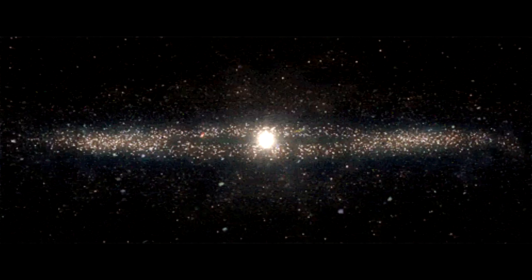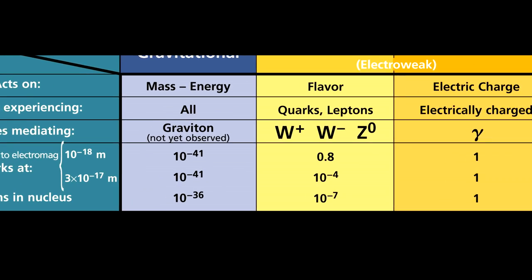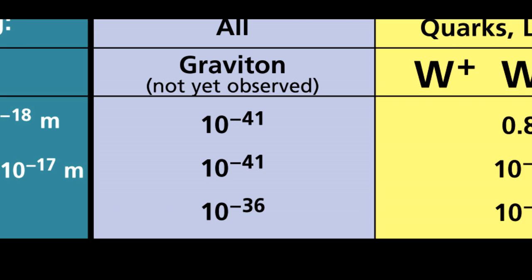After the big bang gravity was the first force to separate from the other unified forces. This is because gravity is the weakest of the four forces. It's about 10 to the 38 times weaker than the strong nuclear force.